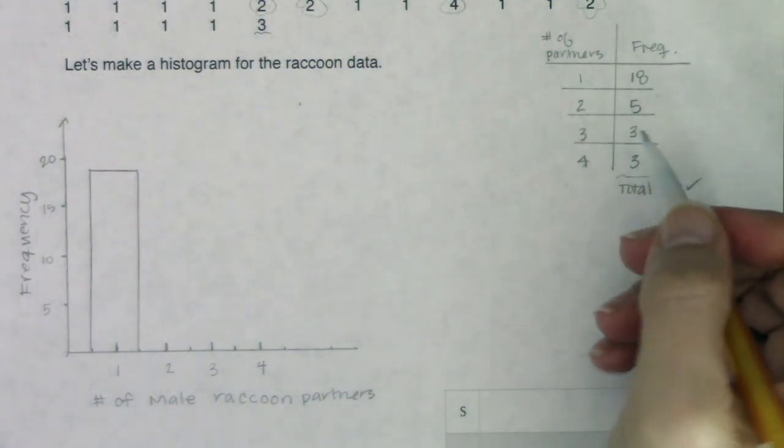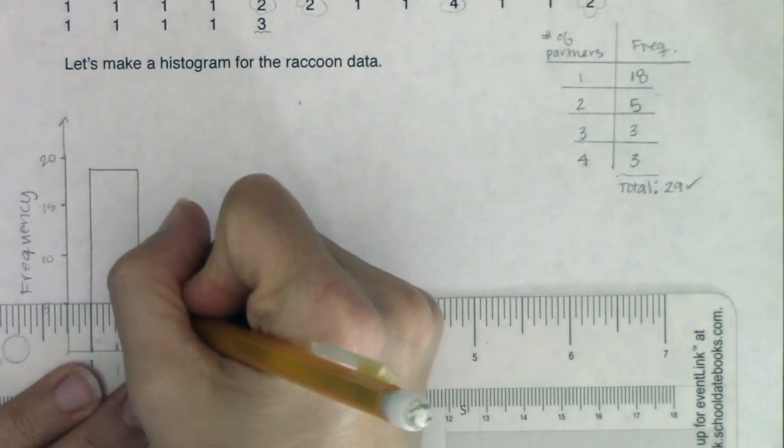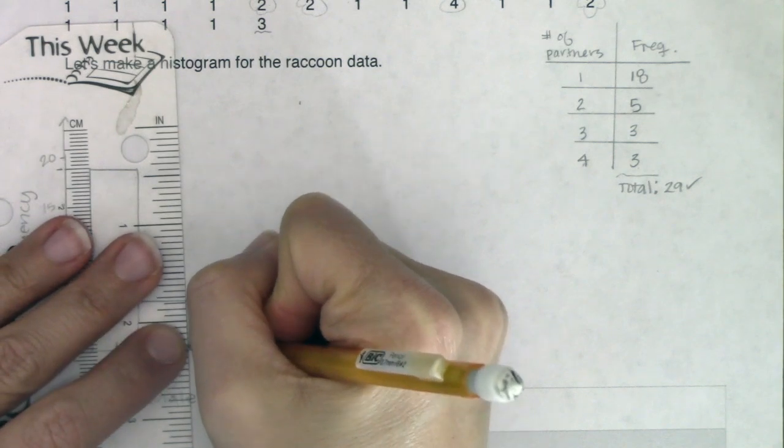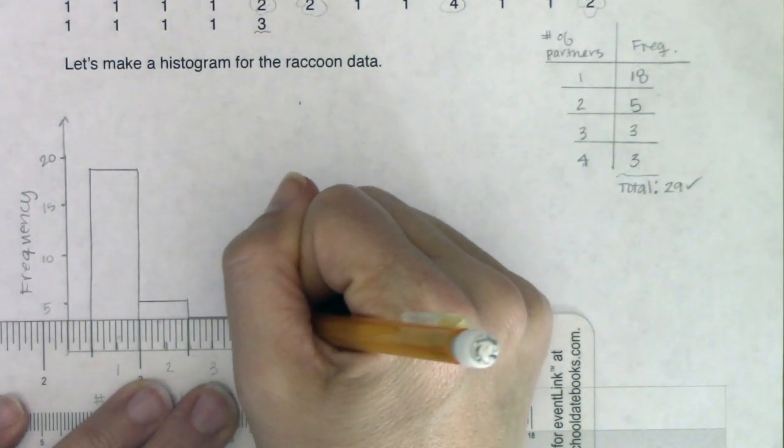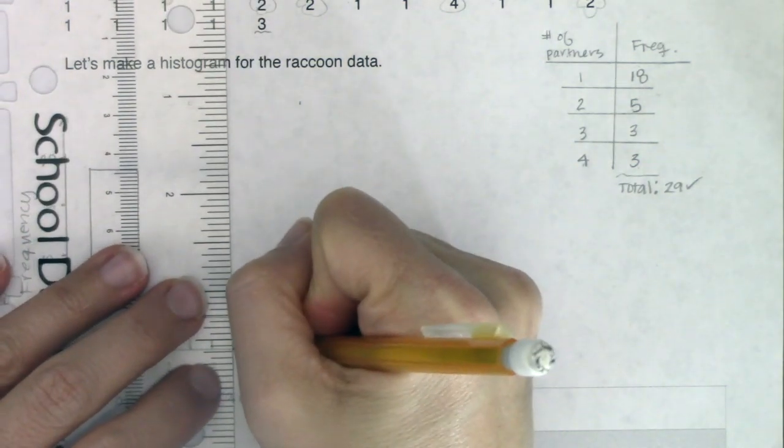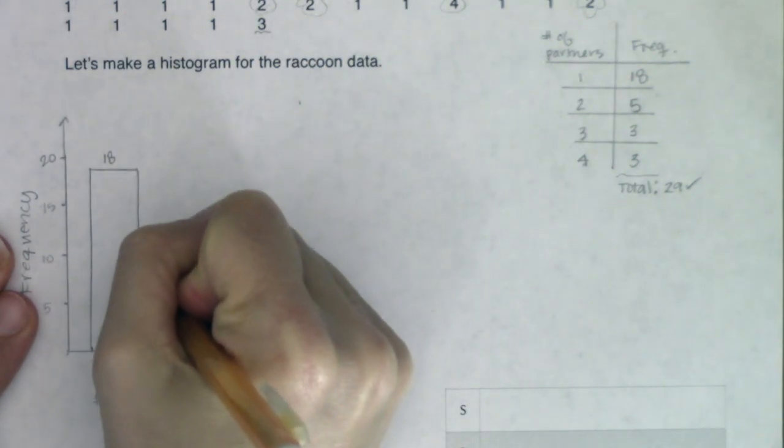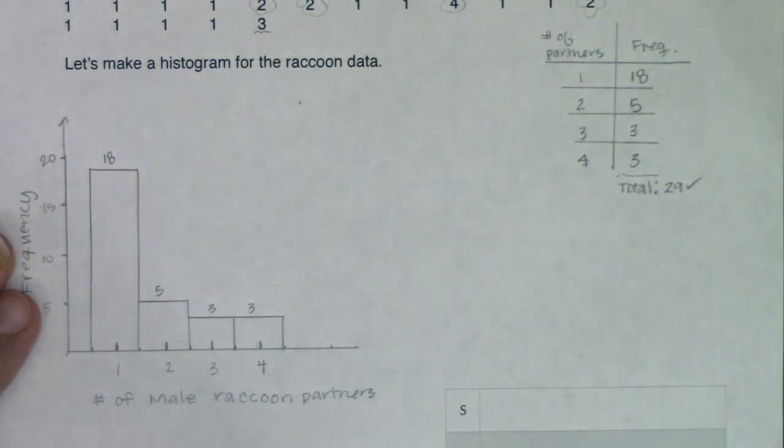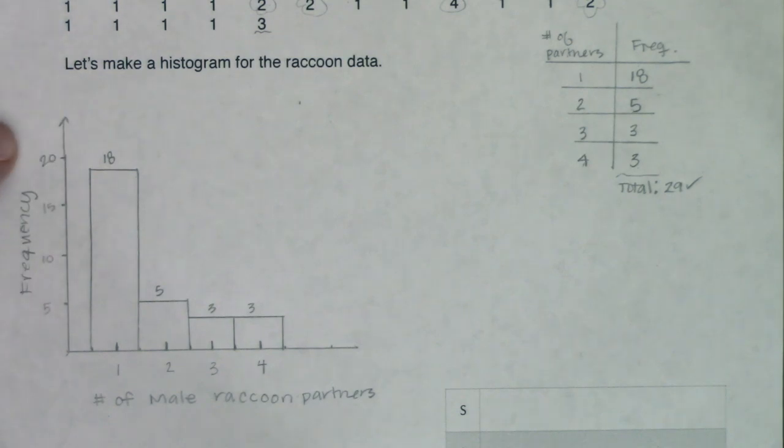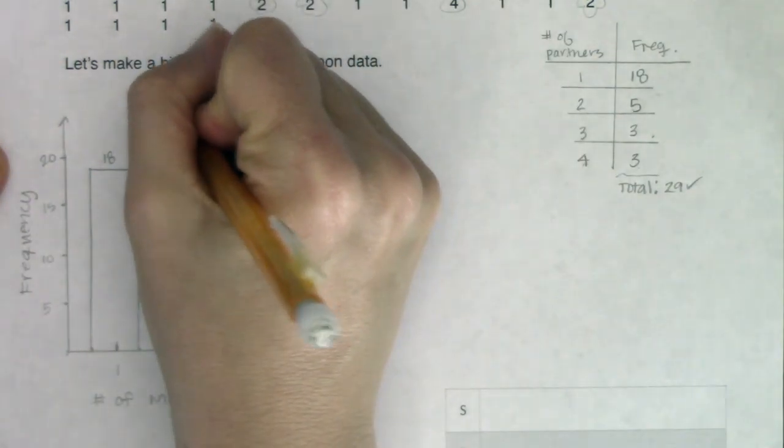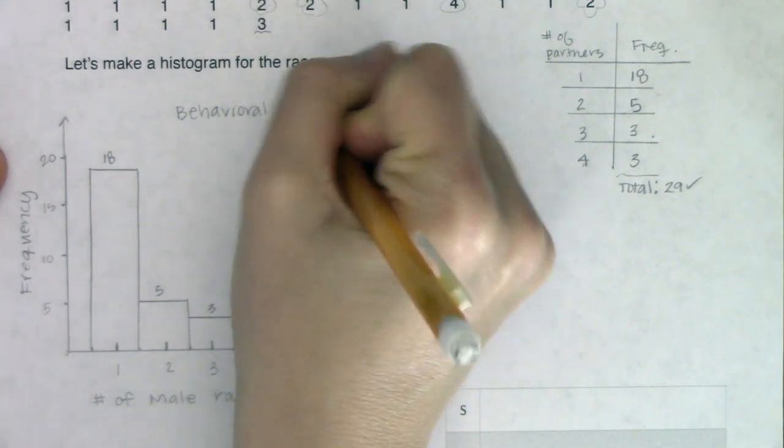Now I'm going to start building my rectangles. This first one needs to go up to 18. The next one for two partners, there were five, so let me put this rectangle up to five. And the last two were both at three. Now you don't have to, but I always like to put the heights here, and I think it's a nice addition. As you go through this, if I'm taking a look at my histogram so far, I'm feeling pretty good. I've got my x-axis scaled and labeled, I've got my y-axis scaled and labeled. I could use a title, so I'll do 'Behavioral Aspects of the Raccoon Mating System.'